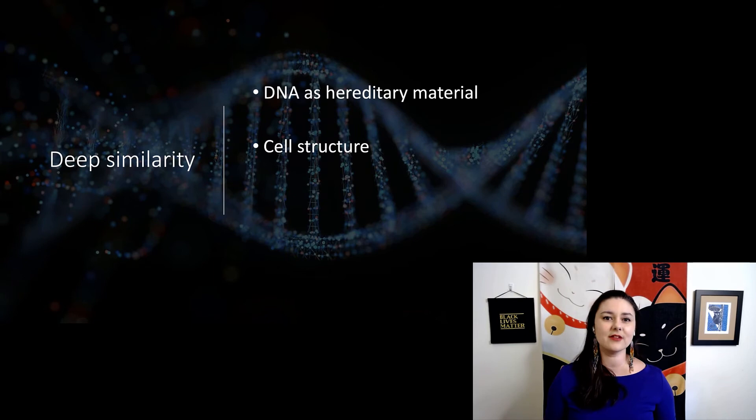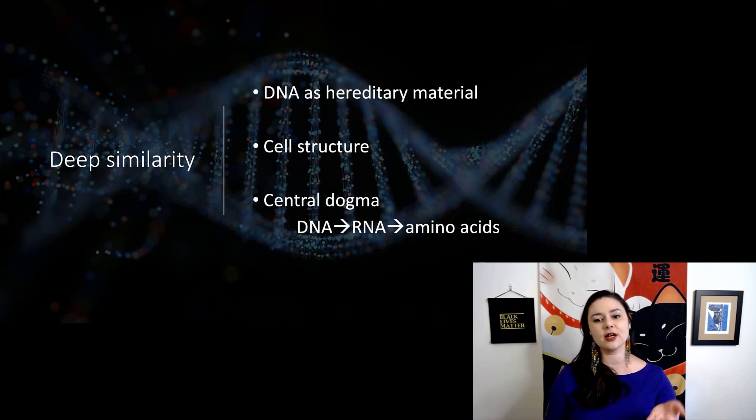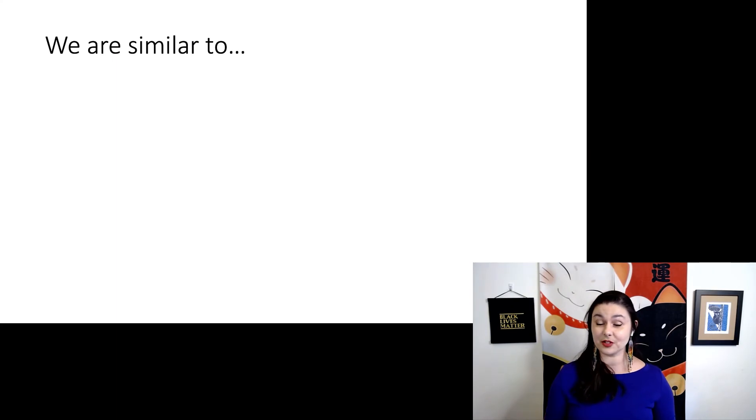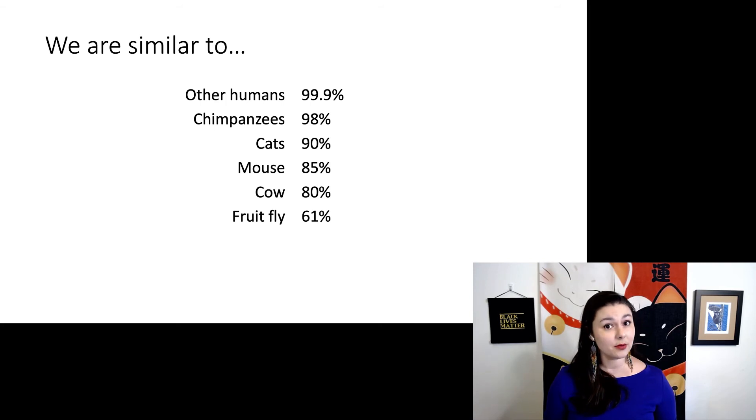We also all have the same cellular structure and the same central dogma. We use DNA, transcribe that into RNA, and then translate that into amino acids. And because we have this similar feature, we can use DNA to compare any living organisms to see how similar they are. So if we use this for humans, we're about 99.9% similar to other humans, about 98% similar to chimpanzees, 90% similar to your cat, 85% similar to mice, 80% similar to cows,